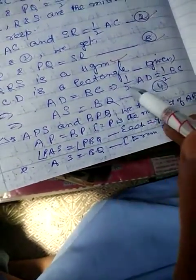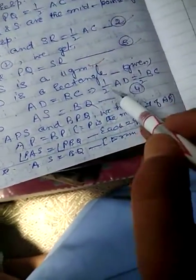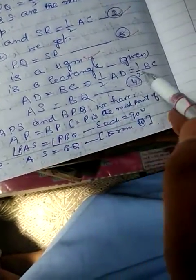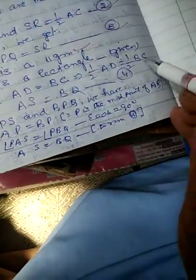Which implies AD is equal to BC. Dividing on both sides by one half means one half of AD is equal to one half of BC, which implies one half of AD is equal to AS and one half of BC is equal to BQ. Let us keep it four.